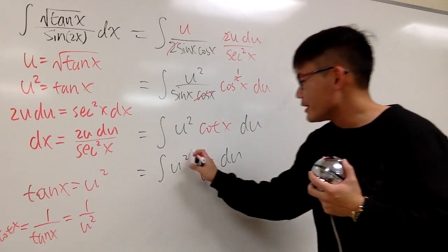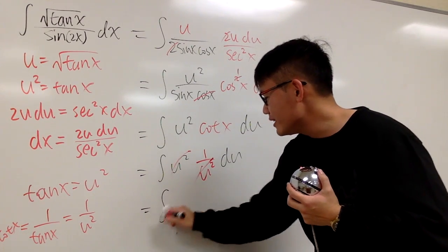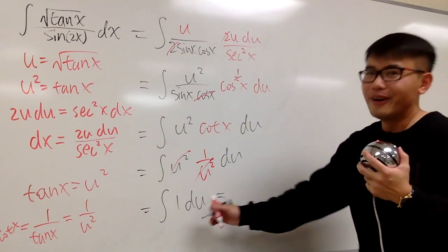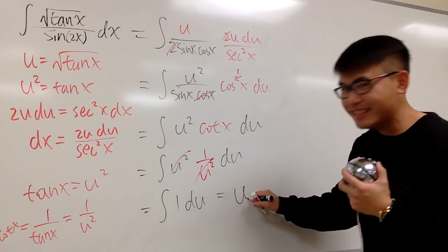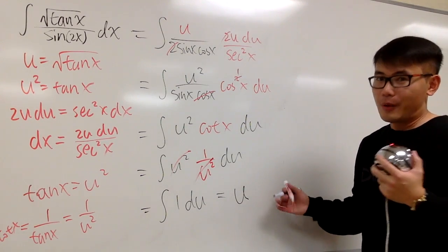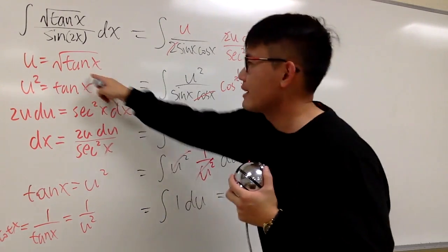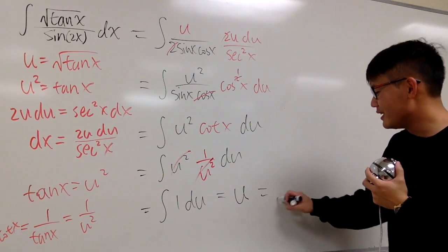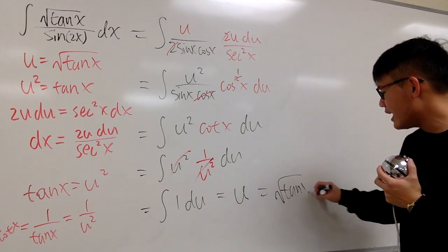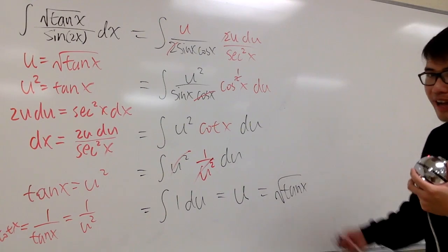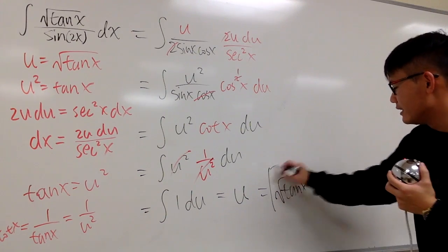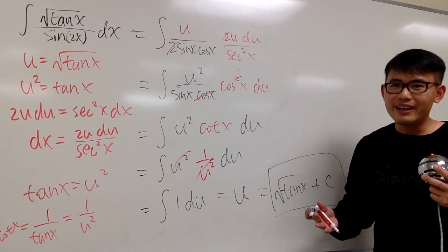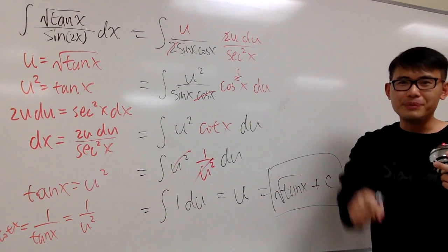Cancel, cancel — so all in all, we're just integrating 1 in the u world. The integral of 1 is just u. Are we done? No, because we have to plug back in. Therefore, the final answer is just square root of tangent x, plus C. This is way cooler than the first way I showed you guys. Thank you, Fabian.